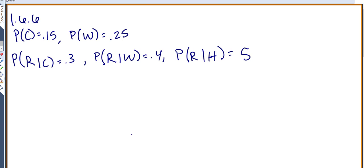In problem 1.6.6, we're told that on each day, weather is going to either be cold, warm, or hot, and then in addition, they're also going to classify it as rainy or not rainy.